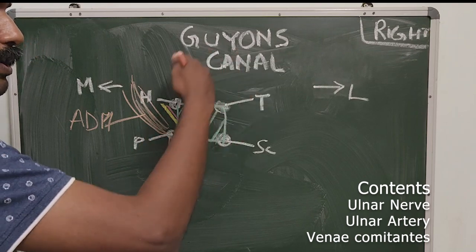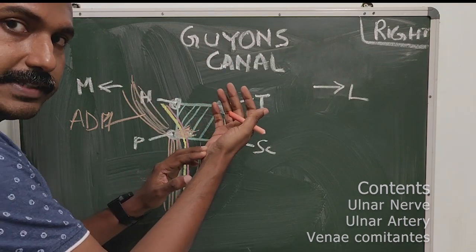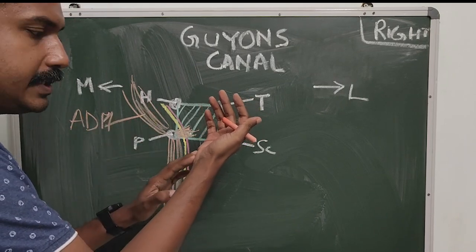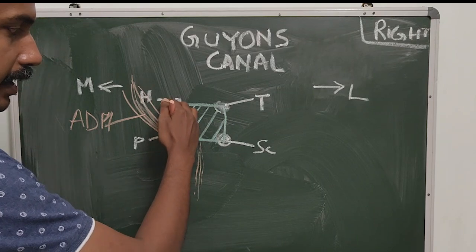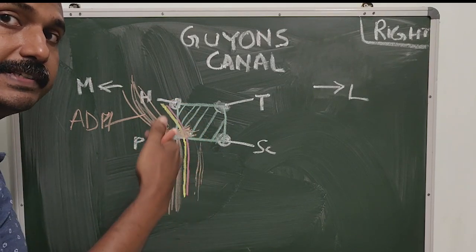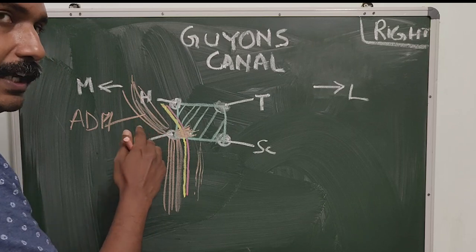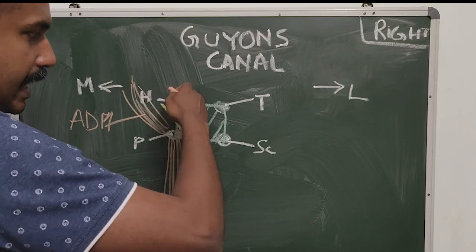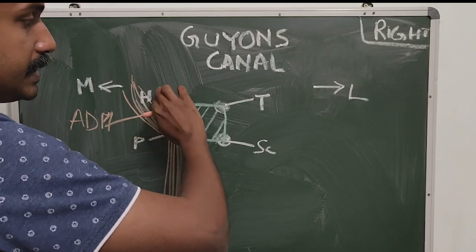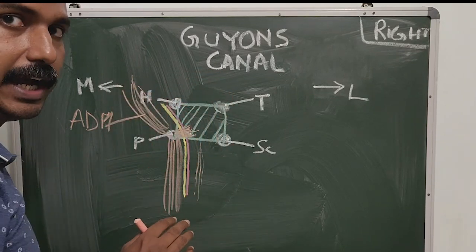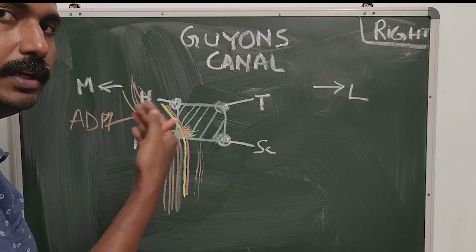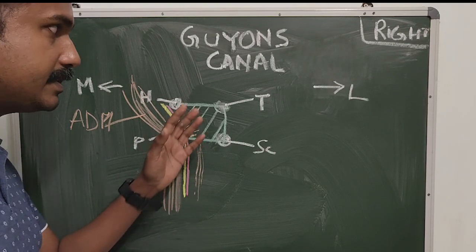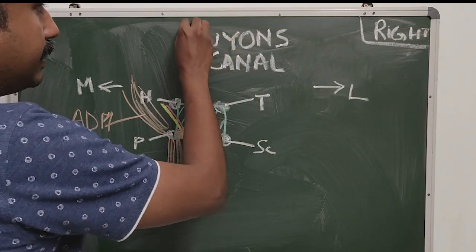Guyon's canal is a potential site for compression of the ulnar nerve — not very common, but clinically important. If the ulnar nerve compression is proximal within the canal, it will cause both sensory and motor involvement. If it is distal, it will cause predominantly sensory involvement, because the motor branch escapes from the canal just medial to the hook of the hamate, going deeper. So a distal compression gives predominantly sensory symptoms, while a proximal compression gives both sensory and motor symptoms.